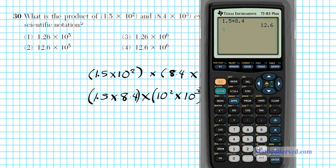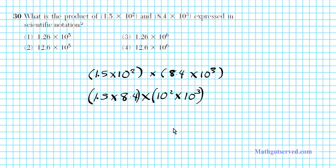1.5 times 8.4 times 10 to the second times 10 to the third. Let's go ahead and use our calculator to figure out what the product of 1.5 and 8.4 are. 1.5 times 8.4 is 12.6. So we have 12.6 times. Now, how do you multiply exponents with the same base? Using the product property of exponents, when you multiply exponents with the same base, you add the powers. So it's going to be 2 plus 3, which is 5.